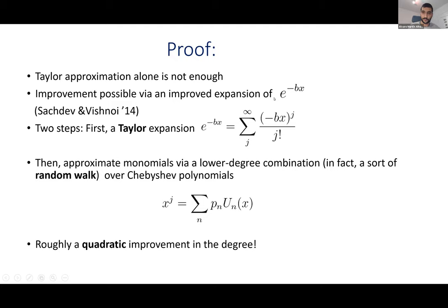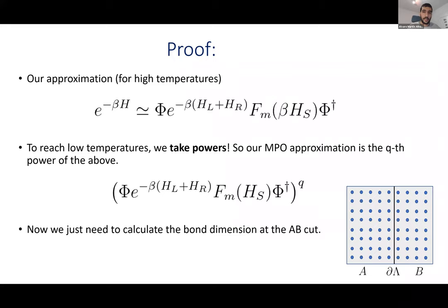It turns out the best approximation is done in two steps: first a Taylor expansion cut at some point, and then each monomial in the Taylor expansion is expanded again in terms of Chebyshev polynomials. So you have a monomial of a certain degree approximated by a polynomial of a smaller degree, which is somewhat surprising. This expansion has a lot to do with random walks, which connects to the diffusive behavior I mentioned earlier. Then we use this approximation, and for a technical reason related to the operator structure, this only works at high temperatures.